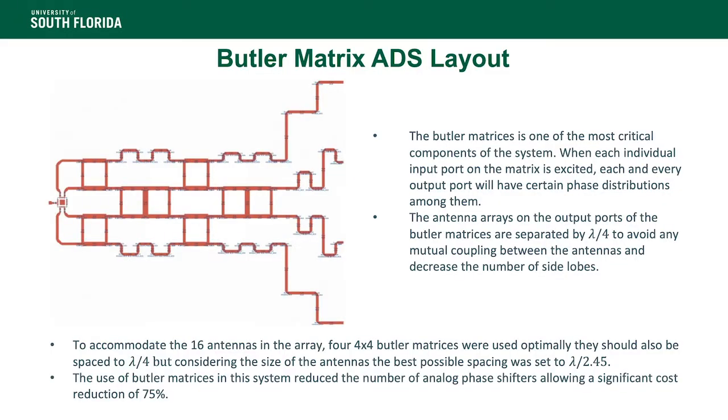This figure on the left is the Butler matrix as designed in ADS. These are a type of beamforming network that is used to feed a phased array of antenna elements. It is designed using hybrid quadrature couplers, RF crossovers, phase delay lines, and phase matching lines. One thing to note here is that the output ports of the Butler matrices are separated by lambda over 4 to avoid any mutual coupling between the antennas and decrease the number of side lobes.